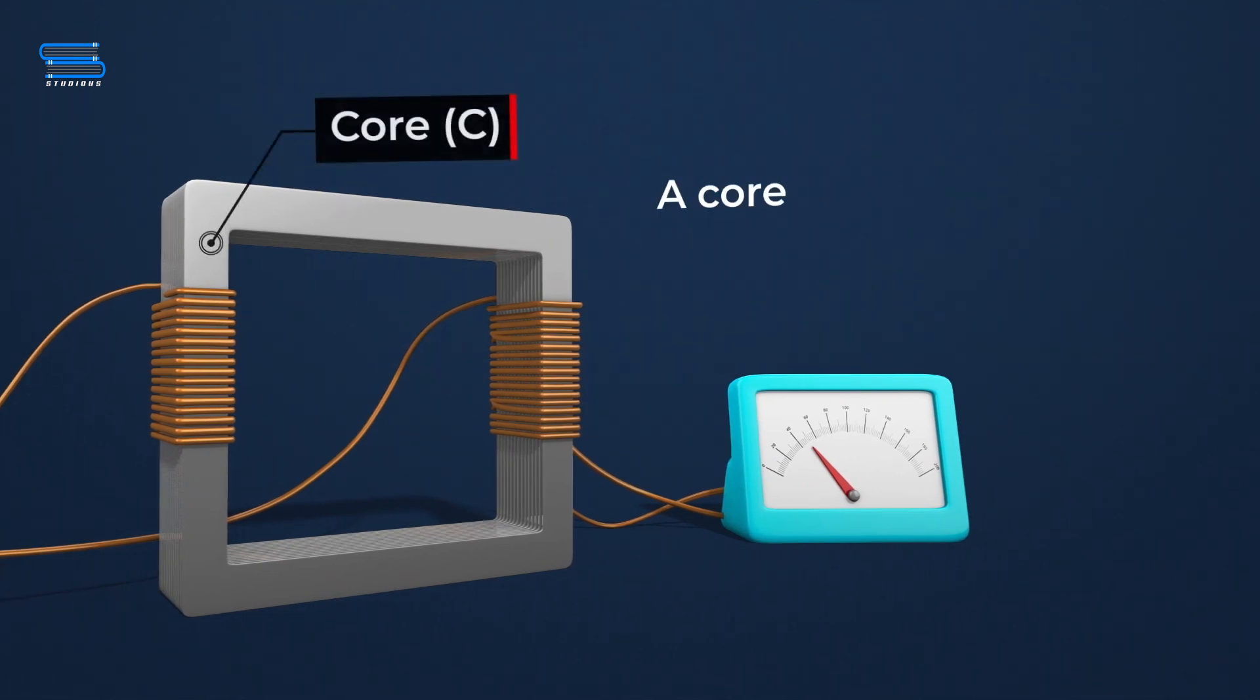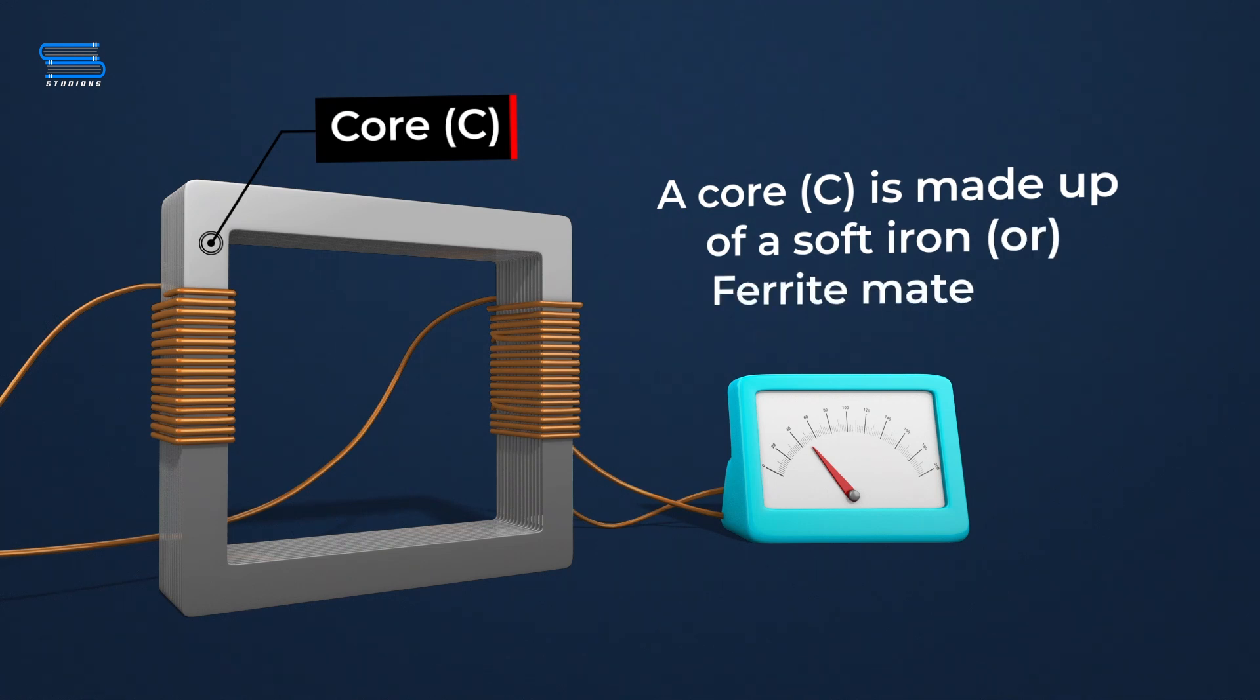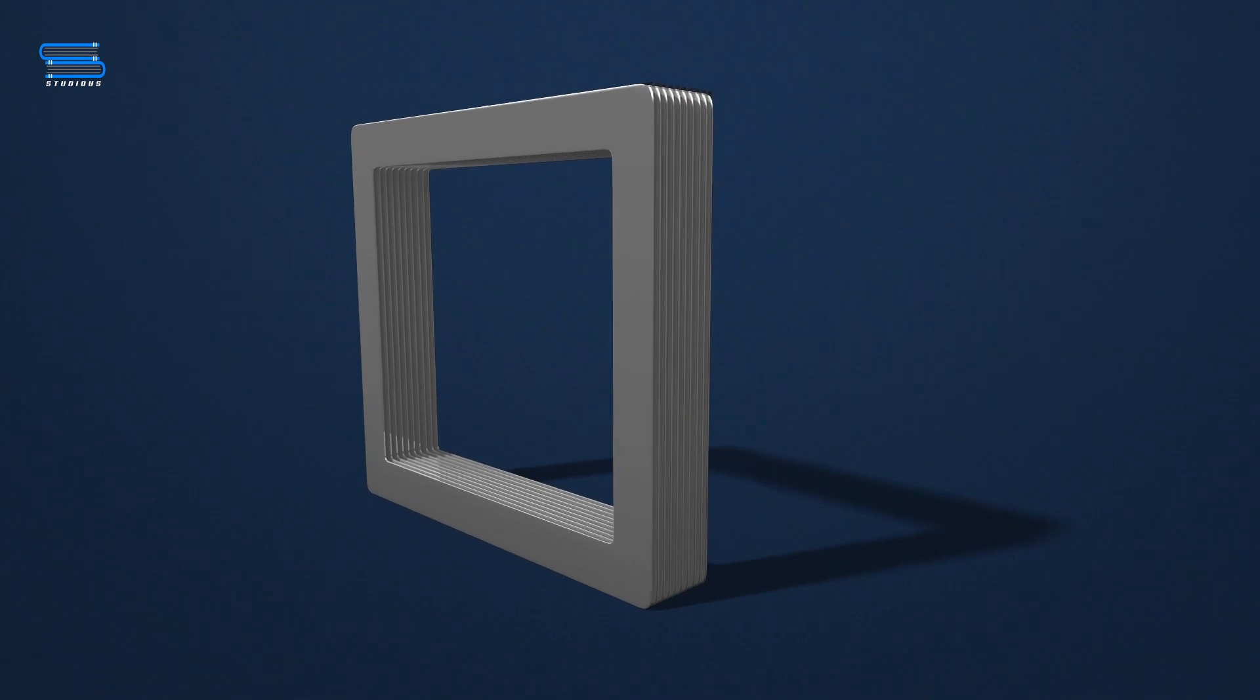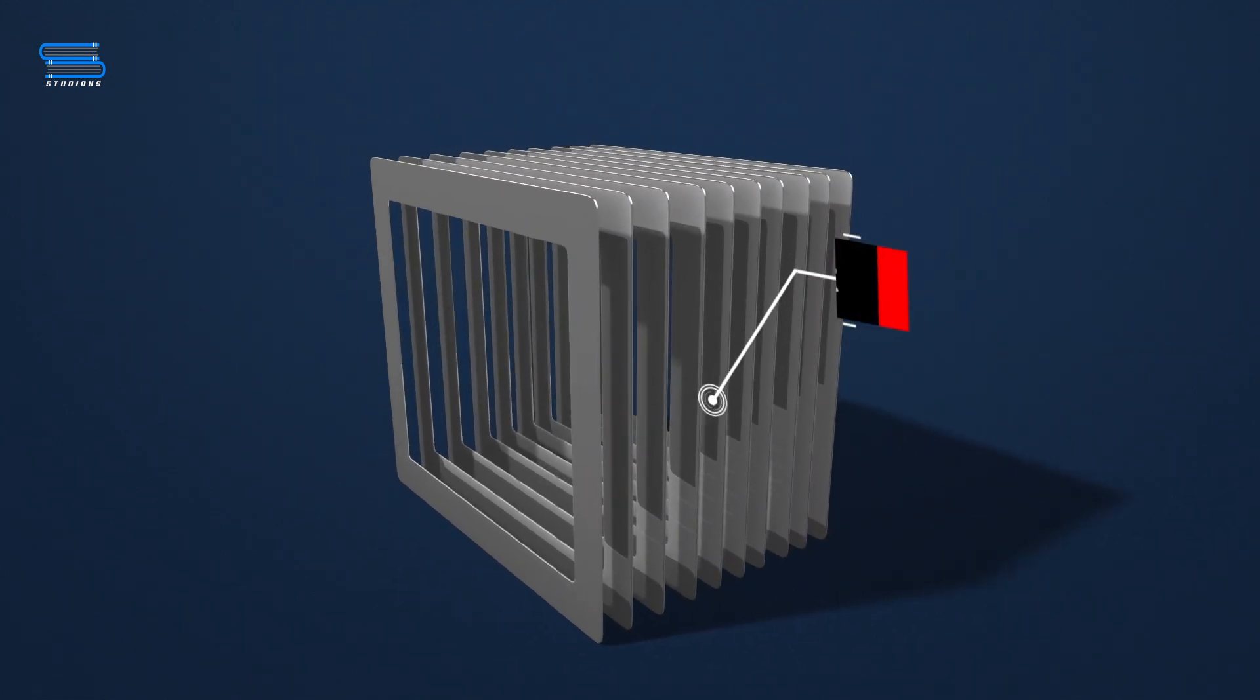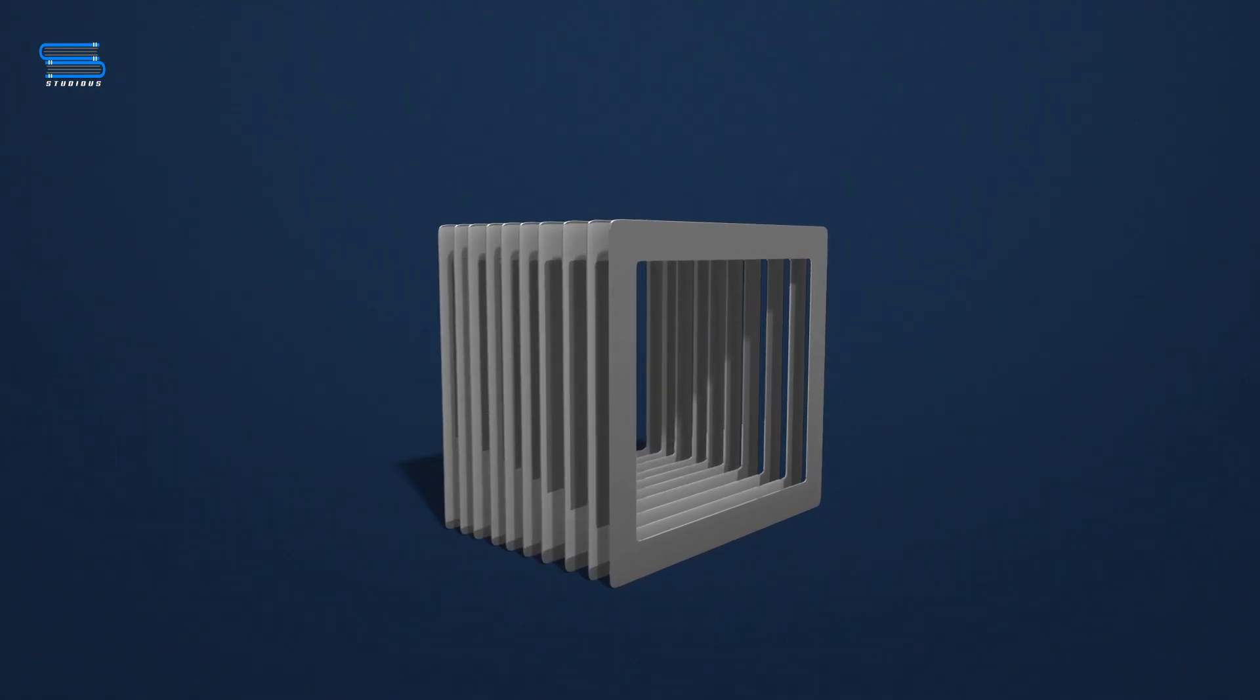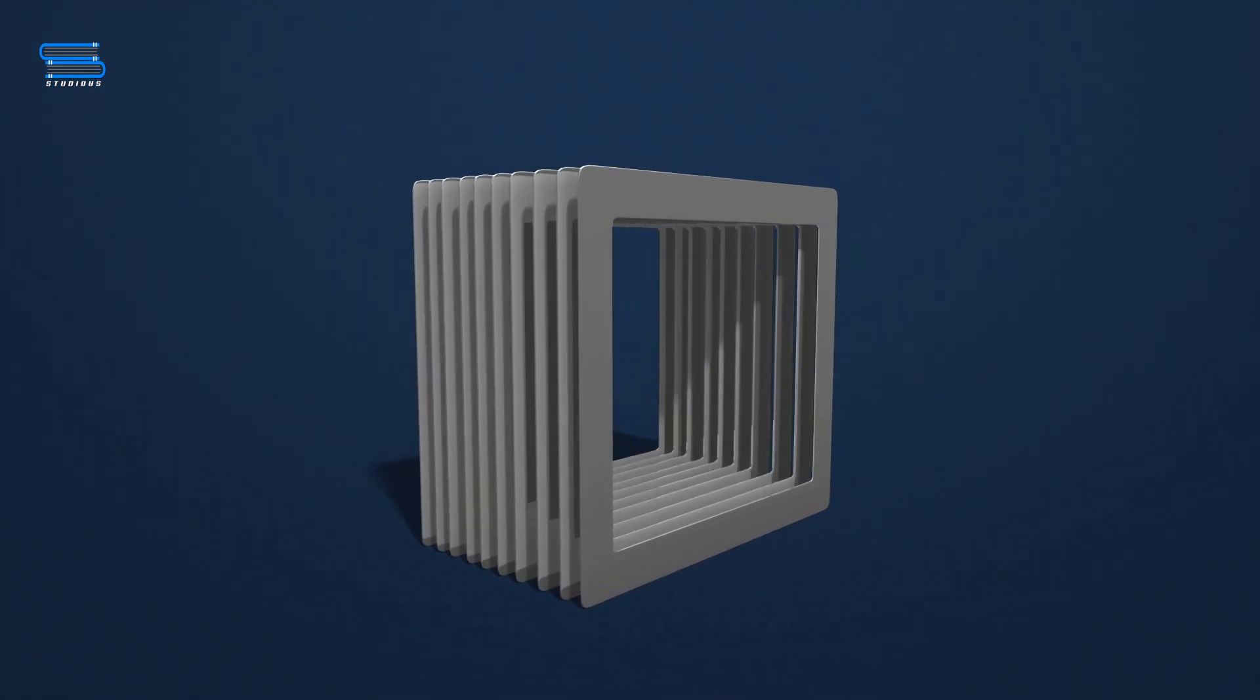In its general form, a core C consists of a soft iron or ferrite material. This core is in the form of a rectangular frame built by placing thin sheets of iron one above the other. These sheets are laminated and therefore are insulated from each other.